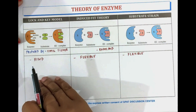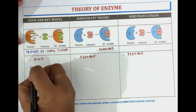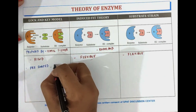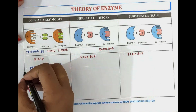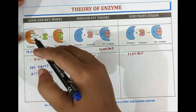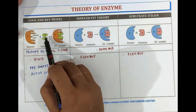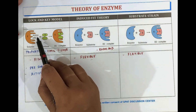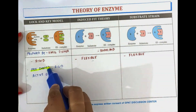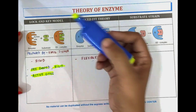In the lock and key model, Emil Fischer said that the enzyme is basically pre-shaped and rigid in structure, and it has active sites. We can see in this structure that it is an enzyme which has active sites. The substrate comes and binds into these active sites, as this theory suggests the enzyme is rigid and pre-shaped.